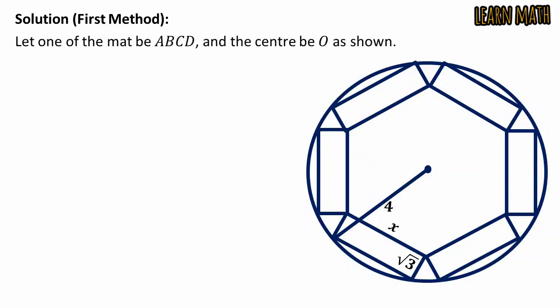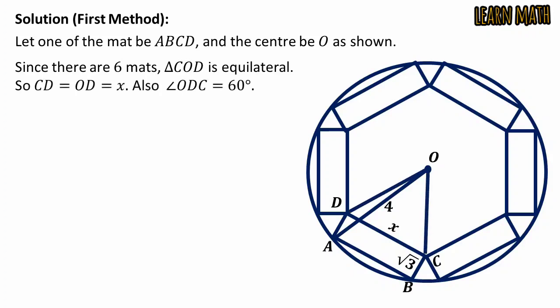Let one of the mat be ABCD, and the center be O as shown in the figure. Since there are six mats, triangle COD is equilateral. So CD equals OD equals x. Also, angle ODC is equal to 60 degrees because the triangle is equilateral.